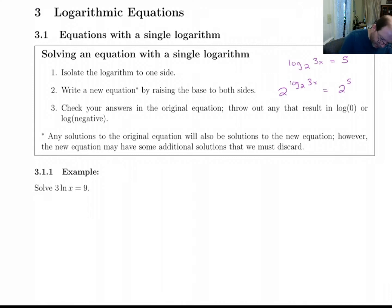Let's look at an example. Solve 3 natural log x equals 9. First thing I would do here is divide by 3 to get ln x equals 3. And now I can do e to the ln x, e because the natural log is base e. So e to the ln x equals e cubed. The e and ln undo each other so we just get x equals e cubed.